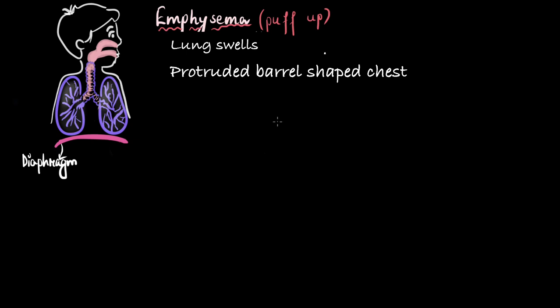Now, what do you think can probably cause such a situation? Swelling of lungs and a protruded barrel-shaped chest? Well, in normal human beings like you and me who are not infected with emphysema, our lungs swell only when we inhale, when the air goes inside our air sacs. So maybe in emphysema, the air went in but it never came out. Maybe the air got trapped.